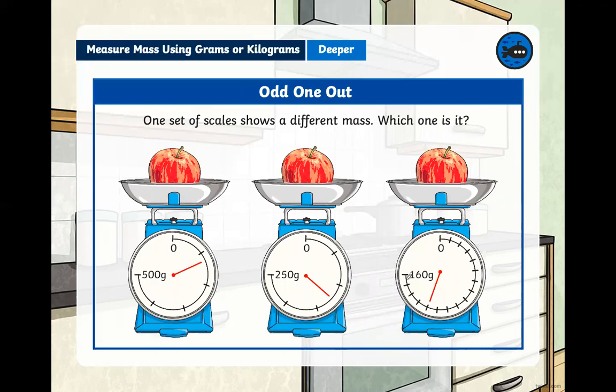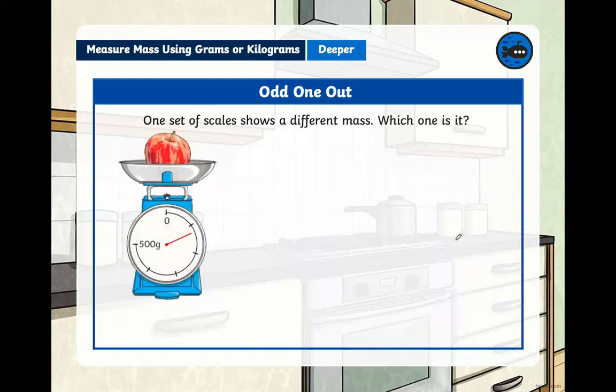Now, here we have odd one out just to practice. One set of scales shows a different mass. What one is it? So in this case, they all have grams, 500, max 500, 250, and 160 grams. So have a look really quickly, brainstorm, which one shows a different mass? So here you could do 500 divided by one, two, three, four, five. So which interval would these be? 250 divided by one, two, three, four, five. 160 divided by one, two, three, four, five, six, seven, eight, nine, 10, 11, 12, 13, 14, 15. I think it's 16 there. Let's find out.